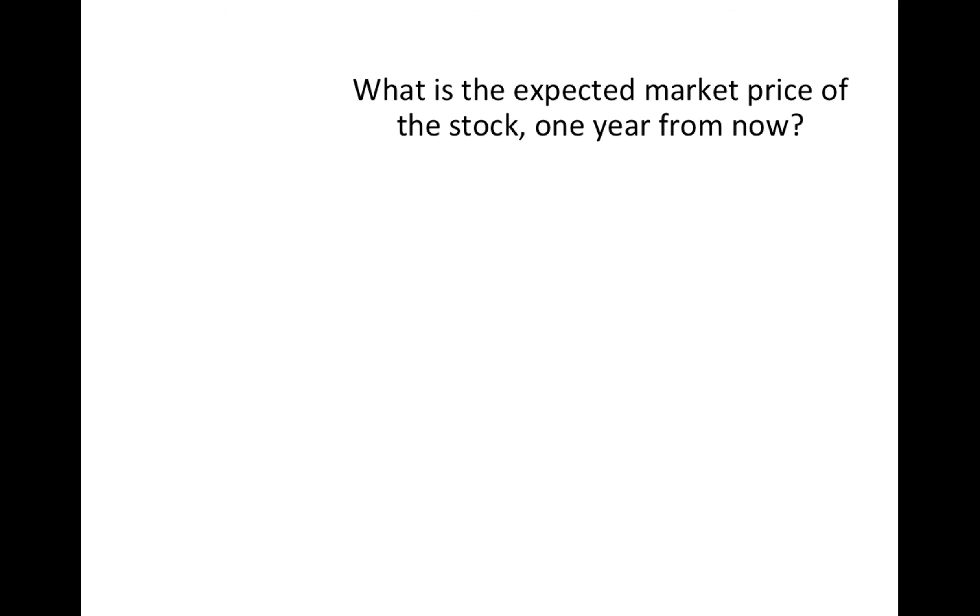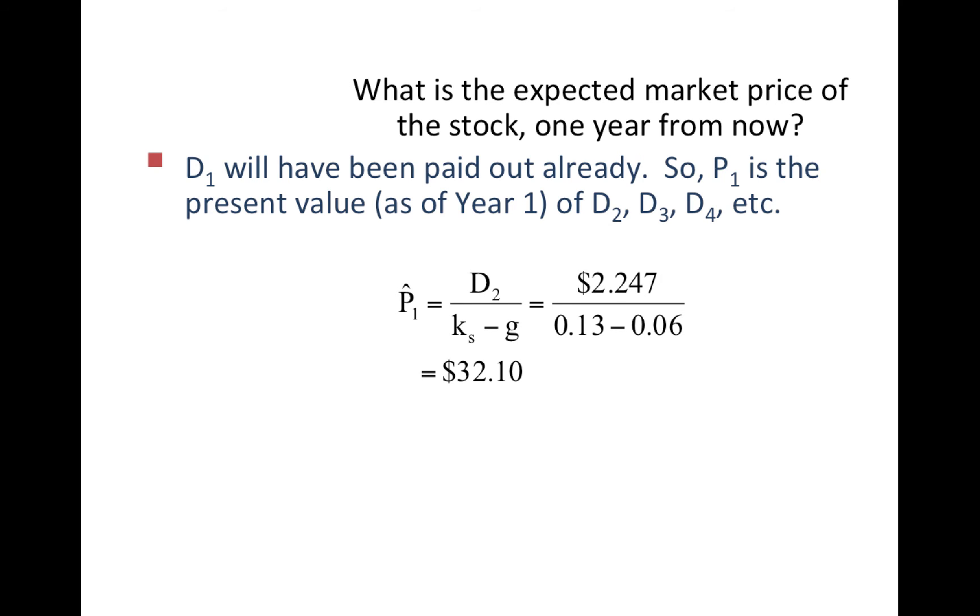What would be, for example, the expected market price of the stock one year from now? So we're not looking for P0, we're actually looking for P1. Well, that's not that complicated. The formula can be very easily adjusted. P1 is going to be dividend 2 over K minus G, or R minus G. In this case, we had already calculated the 2.247, the growth rate, and the R doesn't change. So the price jumps to 32.10. We could have found it just by multiplying P0 times 1.06.